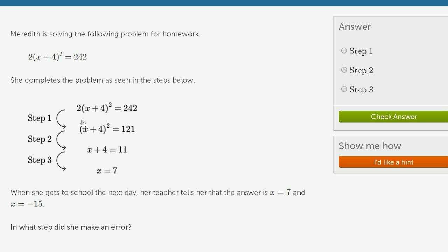Or x plus 4 right over here could be negative 11, because negative 11 squared is also 121. So this right over here, this should say x plus 4 is equal to the positive or negative square root of 11.